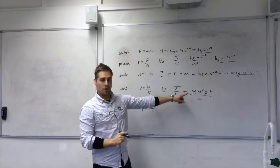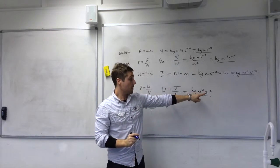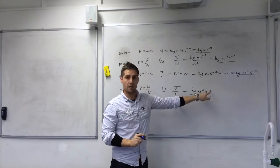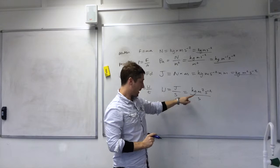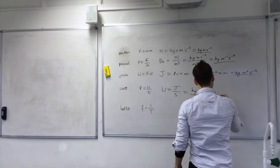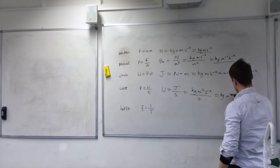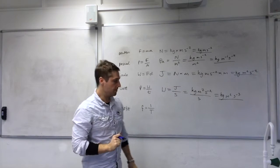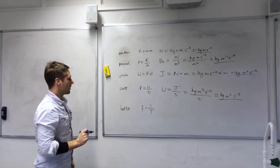So I've got kilogram metres squared per second squared divided by seconds. I can simplify the second term. So that will be seconds to minus three. And that's the watt.